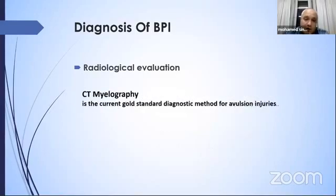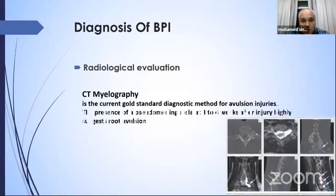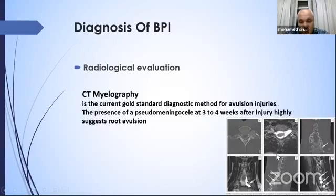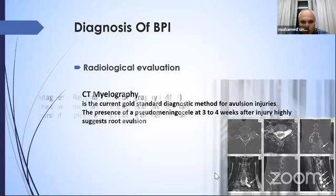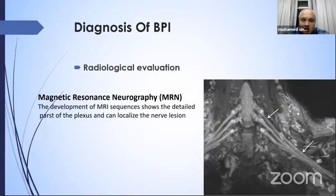CT myelography is the current gold standard diagnostic method for avulsion injuries. The presence of pseudomeningocele at three to four weeks after injury is highly suggestive of root avulsion — seen here in axial, coronal, and sagittal views. Magnetic resonance neurography is a developed MRI sequence that shows detailed parts of the plexus and can localize the nerve lesion; the brachial plexus is very clear on this imaging.